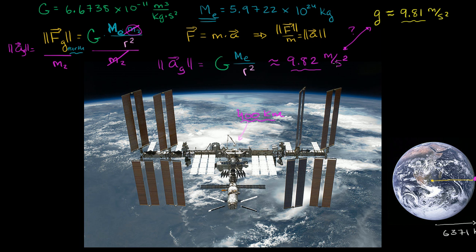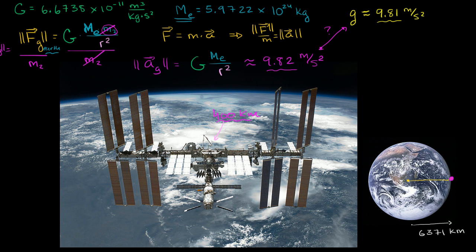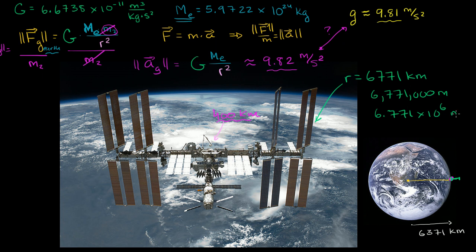Now I'm curious: what is the acceleration due to gravity if we go up 400 kilometers? G and the mass of Earth stay the same, but the radius is now different — we're placing the object 400 kilometers higher. So the new radius is the radius of Earth plus 400 kilometers: 6,371 + 400 = 6,771 kilometers, which is 6,771,000 meters, or 6.771 times 10 to the 6th meters.